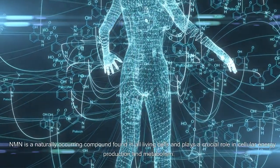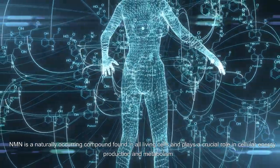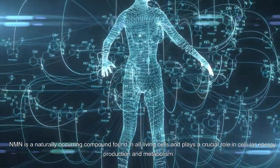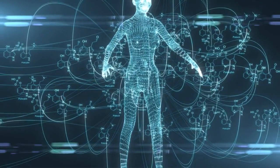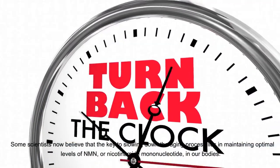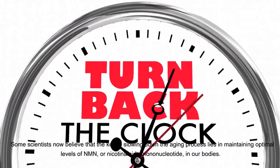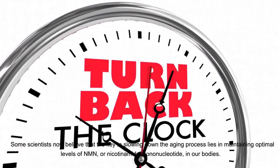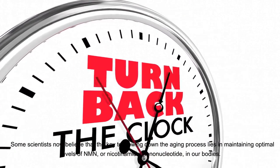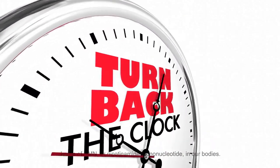NMN is a naturally occurring compound found in all living cells and plays a crucial role in cellular energy production and metabolism. Some scientists now believe that the key to slowing down the aging process lies in maintaining optimal levels of NMN, or nicotinamide mononucleotide, in our bodies.